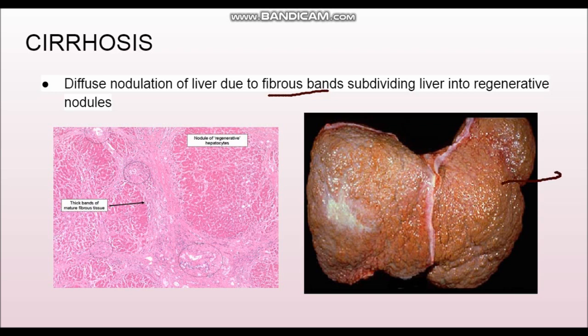This is the gross appearance of the liver. Normally the liver is very smooth and has a glistening surface. However, in the cirrhotic liver you can see there are nodules present. These are regenerative hepatocytes which are surrounded by fibrous septa.